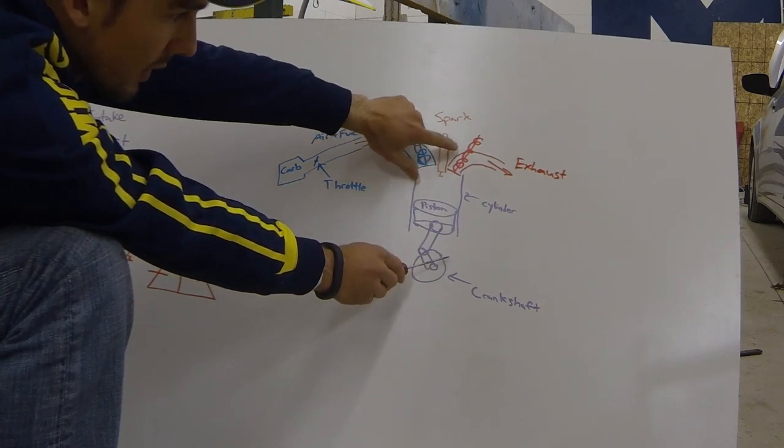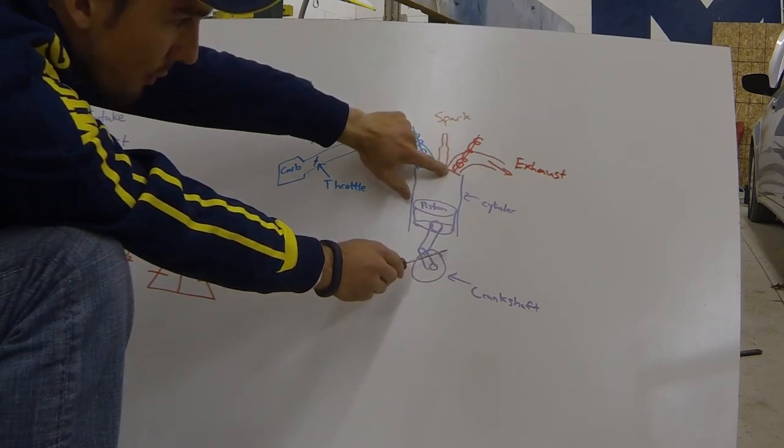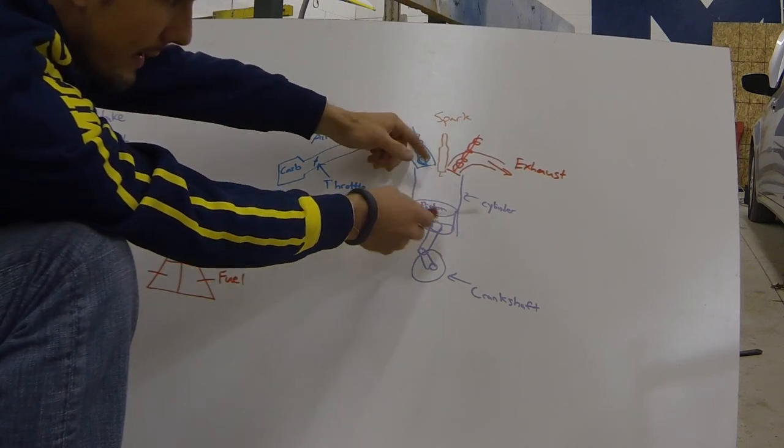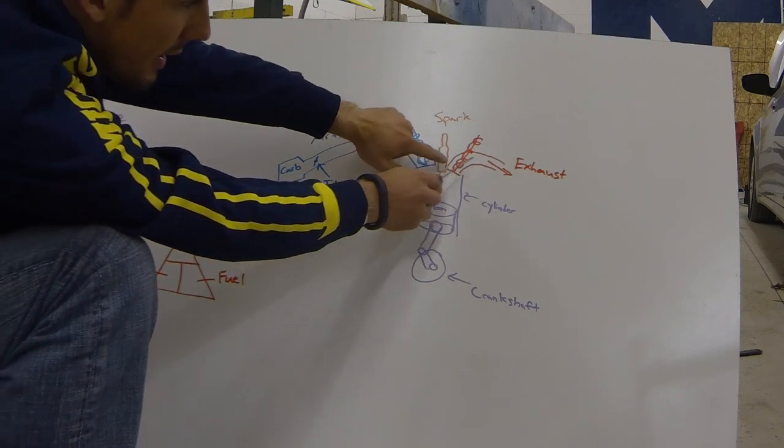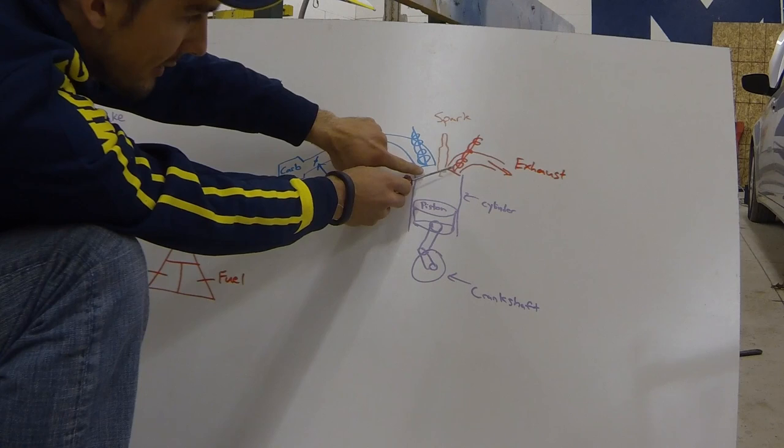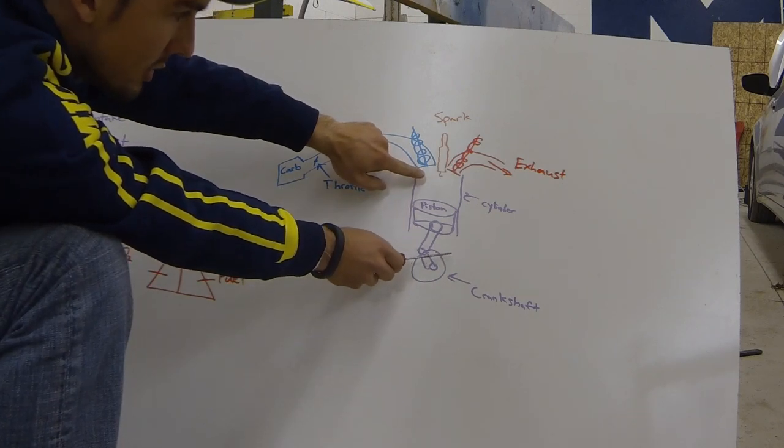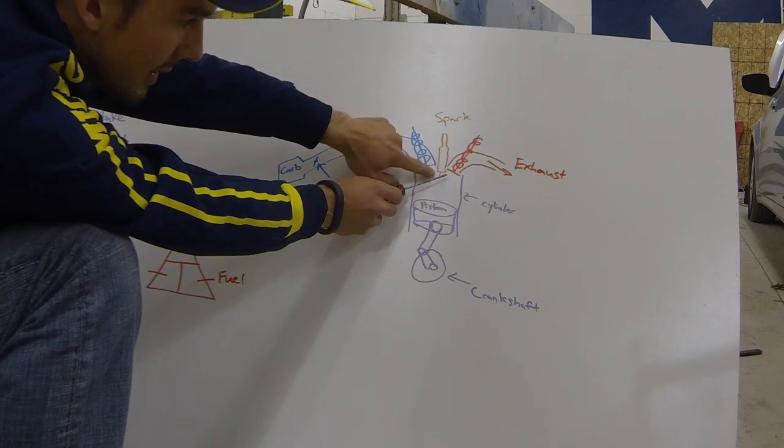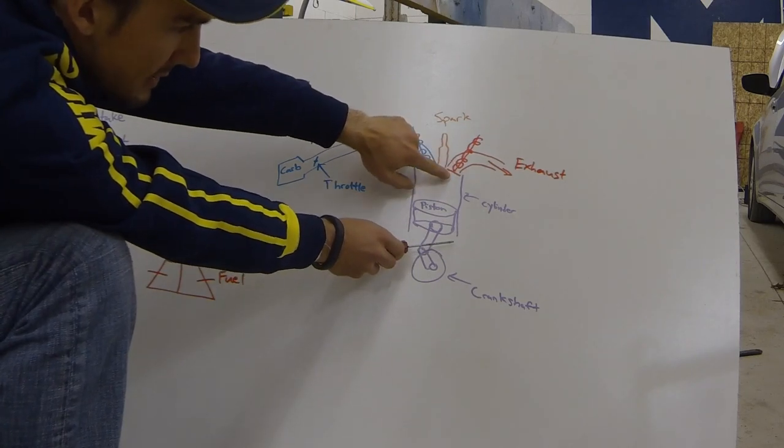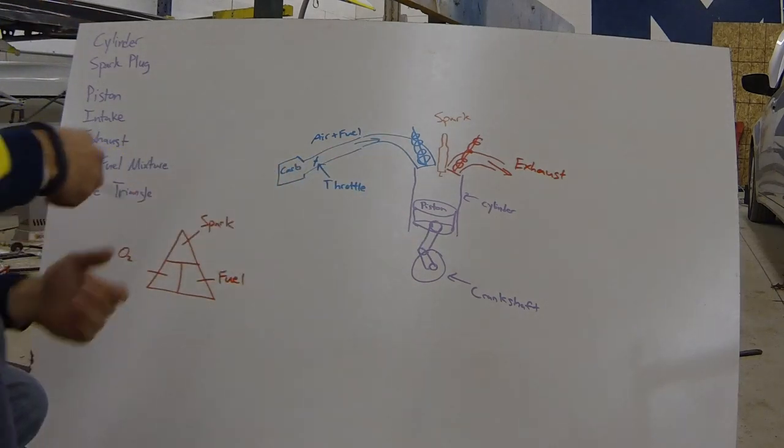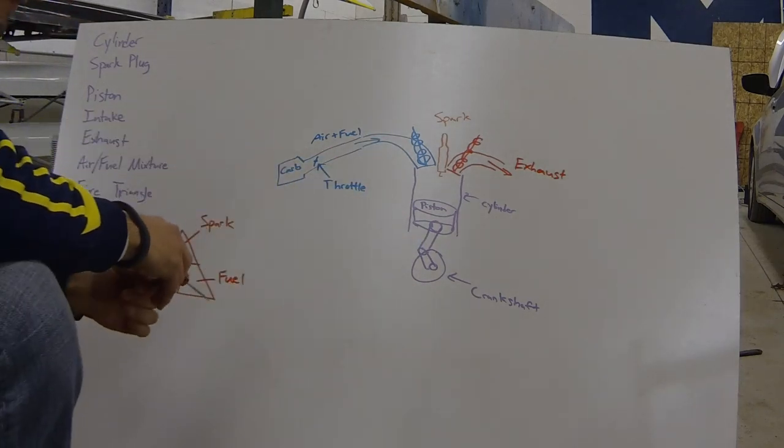The piston, once it gets all the way down, will have the exhaust valve open and push all the burnt gases out—all the spent fuel and oxygen out through the exhaust. It will close the exhaust valve, open the intake valve again, pull down a new charge of air and fuel, close the intake valve, compress it, ignite it, go down, open the exhaust valve, go back up, push it out, and just keeps repeating that process thousands of times a minute.